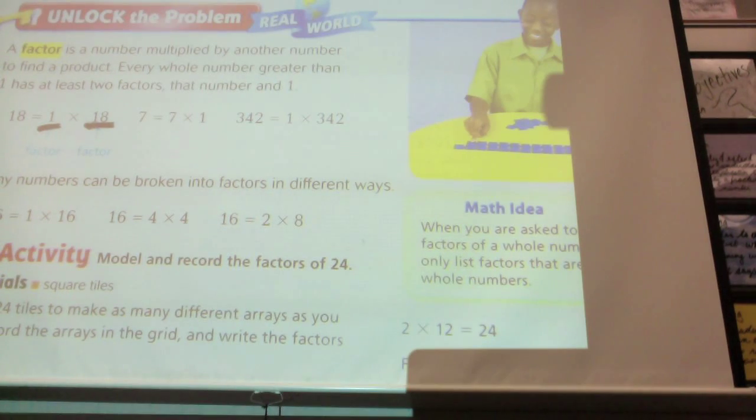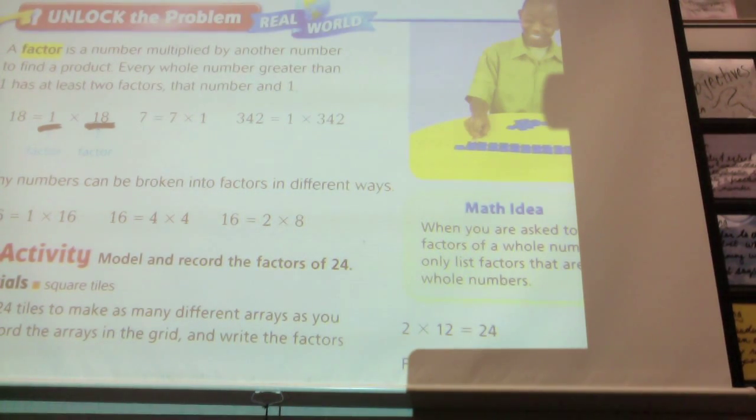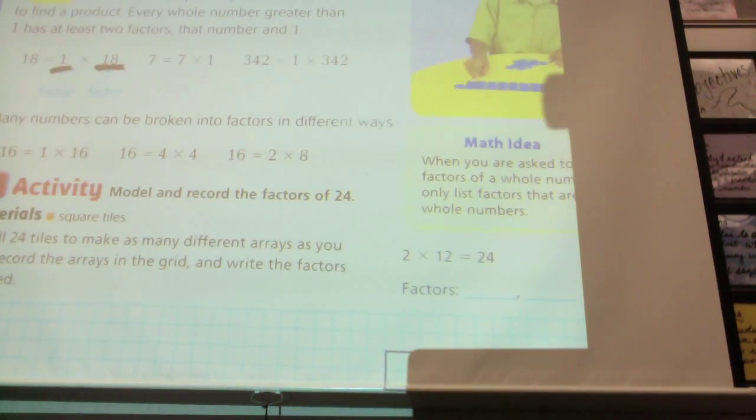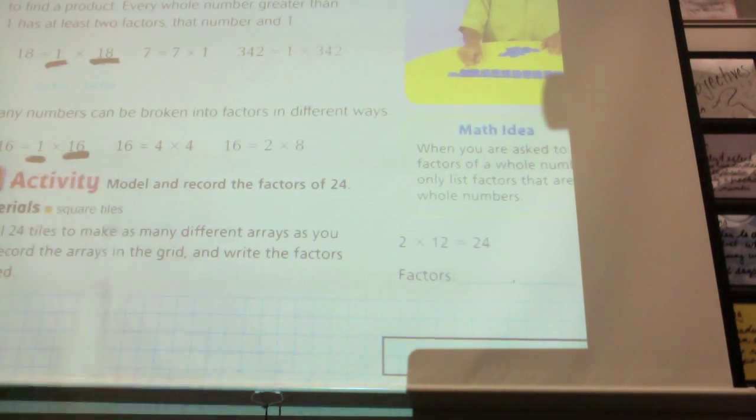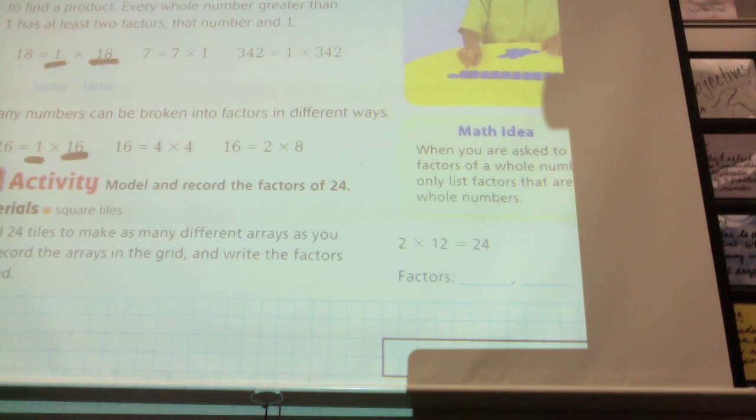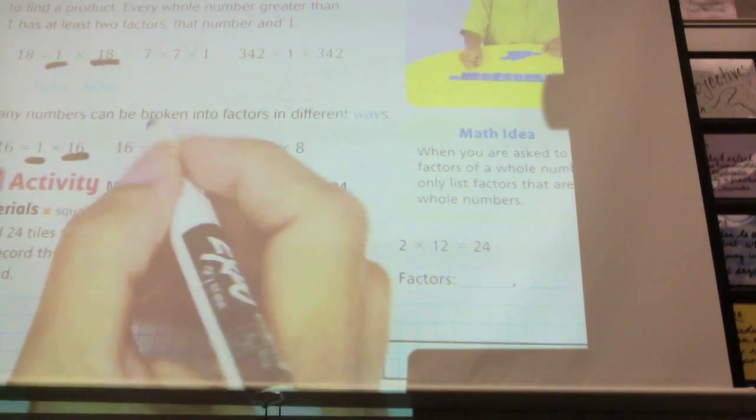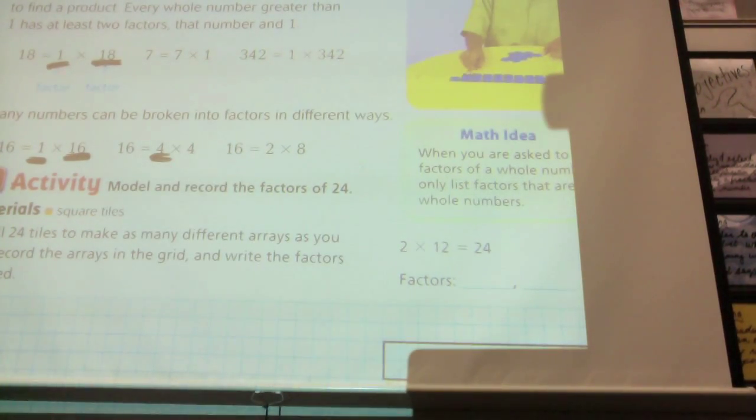Now, a lot of numbers have more than two factors. So every number has at least how many? Two. A lot of numbers have more. Let's look at some examples of numbers that have more. Look at the number 16. What are the first two factors we know it has? 1 and 16. What's another way we can multiply to get the number 16? Preston? 4 times 4. So another factor is 4.